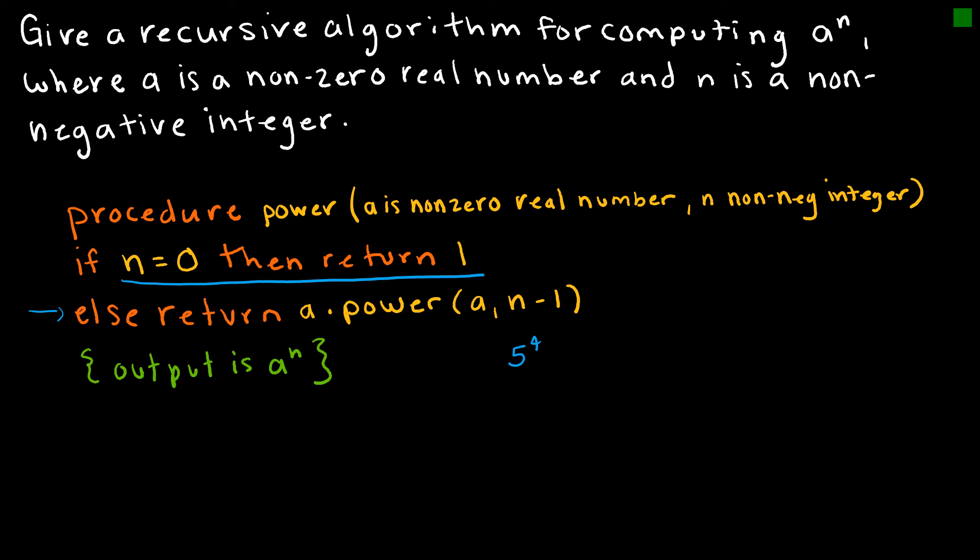So what exactly does that mean? Let's say I've got 5 to the 4th. So what does this algorithm tell me to do? Well, n in this case is 4, because that's the power. And that says, okay, 5 to the 4th can be written as a times 5 to the 4 minus 1, which is 3.